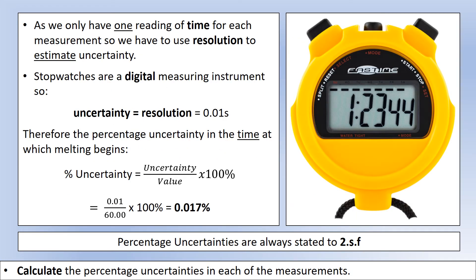If we continue on, likewise for our time measurements. We're going to do the percentage uncertainty in the time that melting begins. According to my table, that was at 60 seconds. The stopwatch is a digital measuring instrument. So the uncertainty is equal to the resolution, 0.01. So that gives us a percentage uncertainty of 0.017%. So the percentage uncertainty in the time is tiny. Unlike SHM or freefall, where the time is a significant source of uncertainty, it certainly is not here, mainly because there's no human trying to judge when to stop the timer.